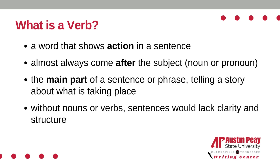What is a verb? A verb is a word that shows action in a sentence. It almost always comes after the subject, which is a noun or pronoun. It is the main part of a sentence or phrase telling a story about what is taking place. Without nouns or verbs, sentences would lack clarity and structure.